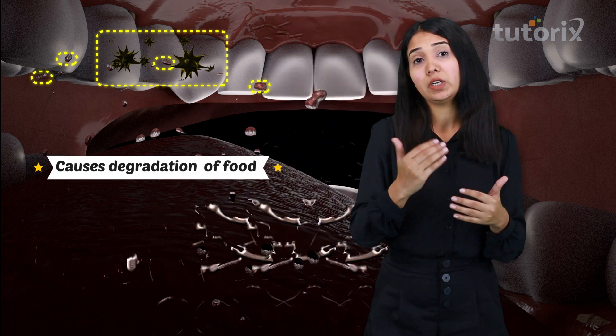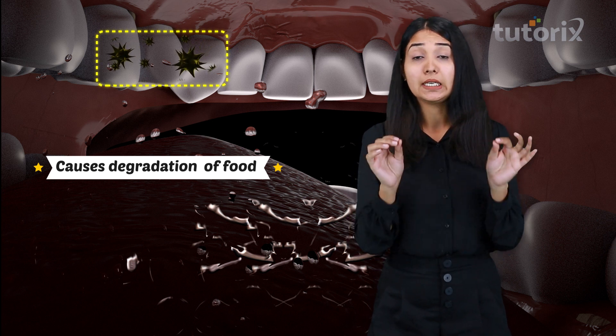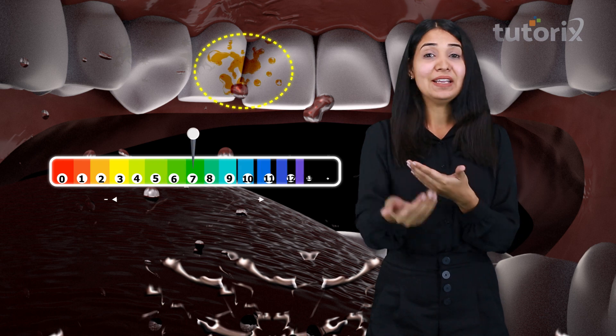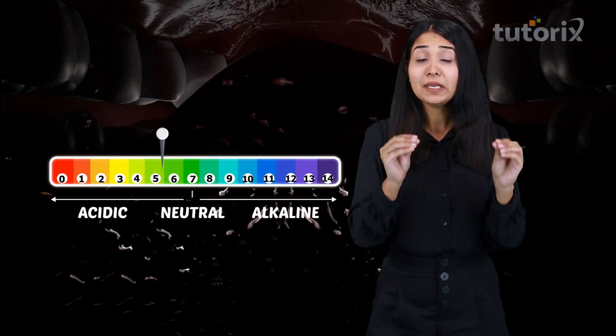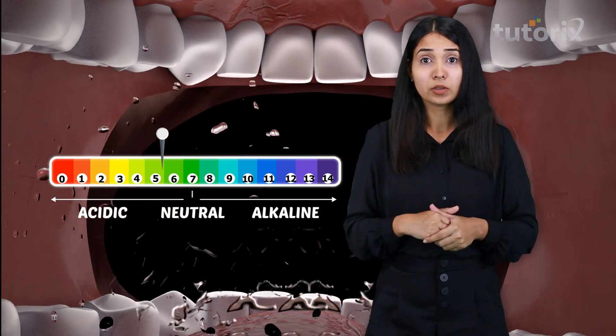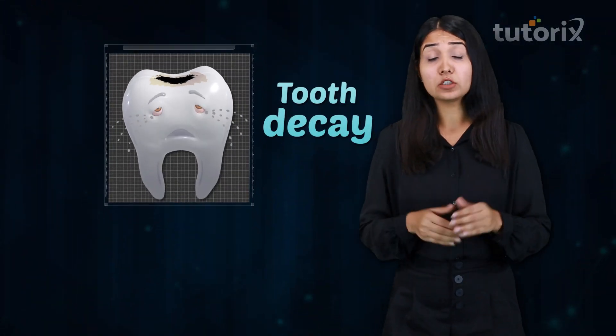Whenever we eat food, some food particles remain in our mouth and affect the pH value. The bacteria present in the mouth cause degradation of these food particles and sugar particles, leading to the formation of acid. Whenever acid is formed, it lowers the pH in our mouth.